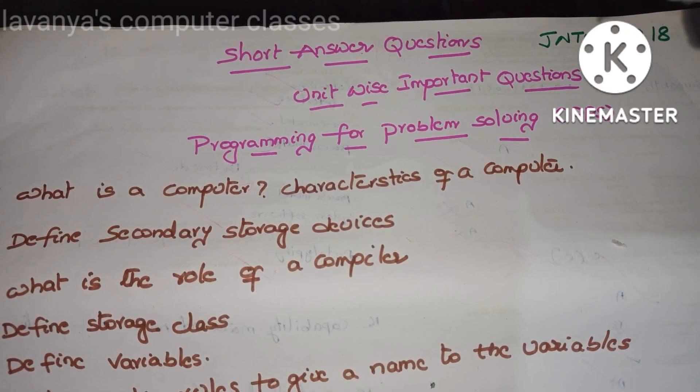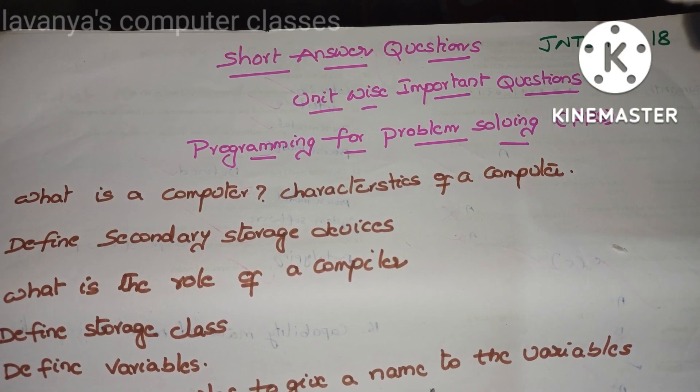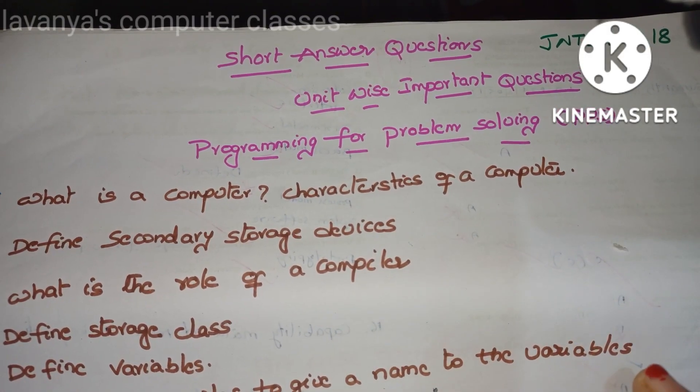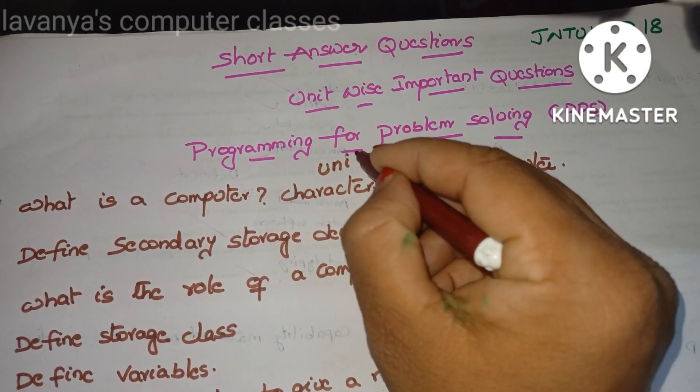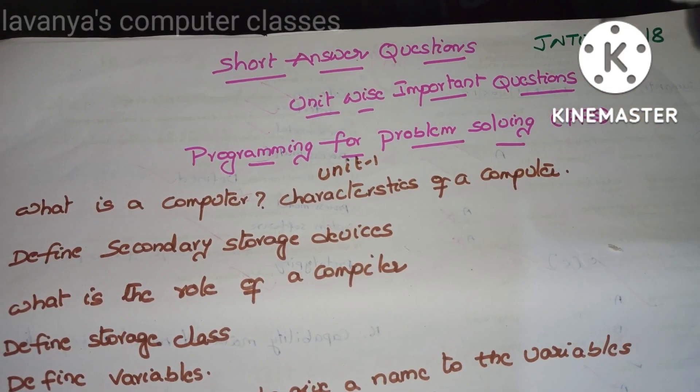Part A is the short answer questions. I already gave type questions in the previous videos. Now onwards I'll start making the videos for short answer questions. Unit by unit, short answer questions. This is Unit 1. Unit 1 is a lengthy unit, so many important questions are there.